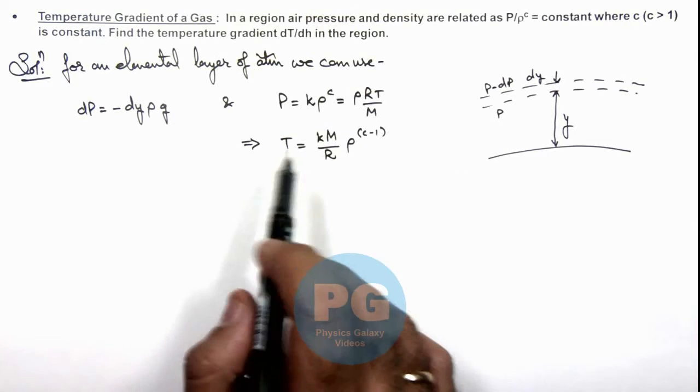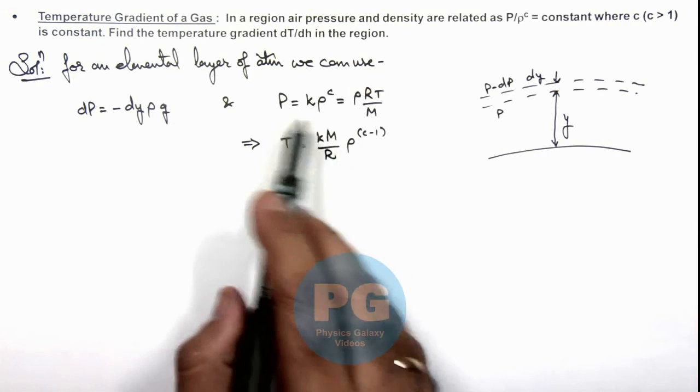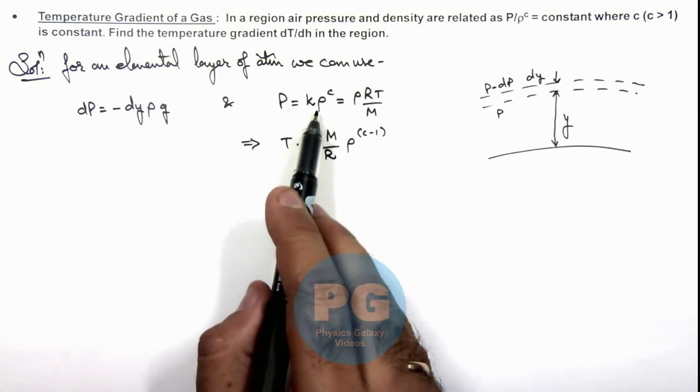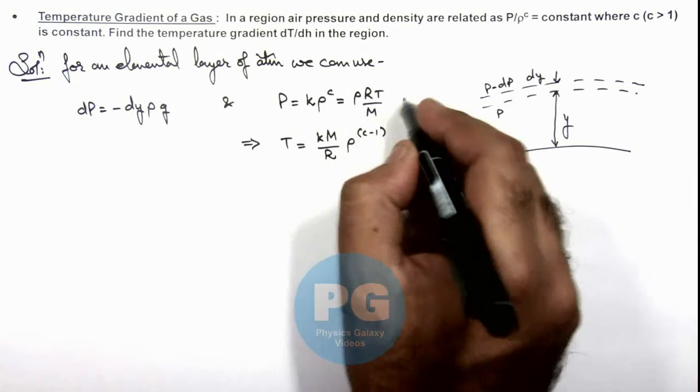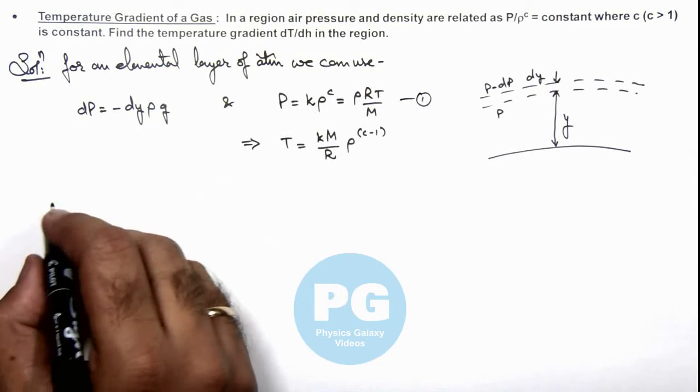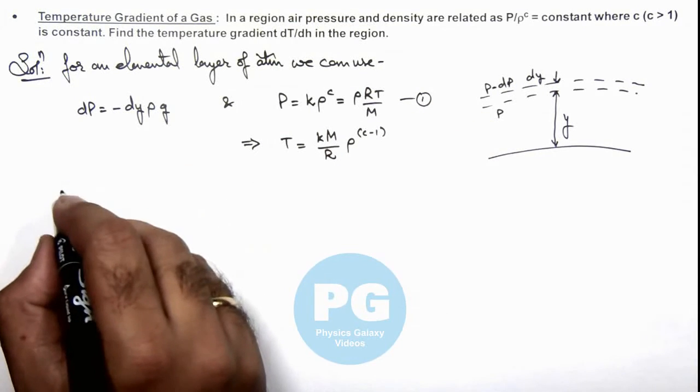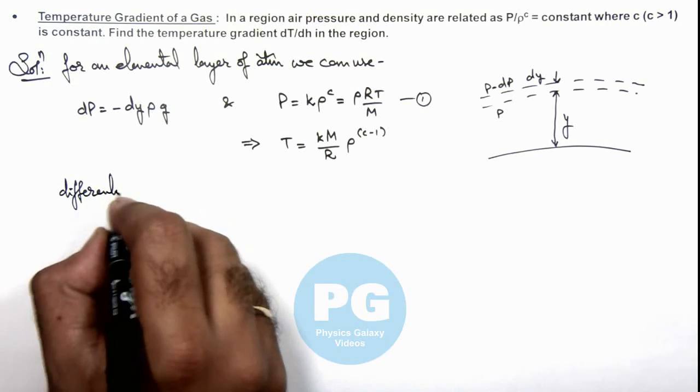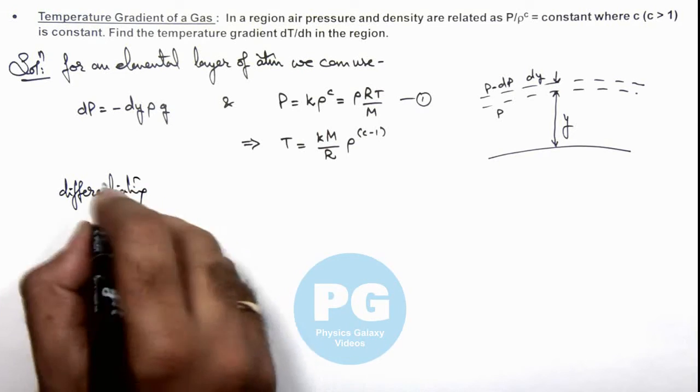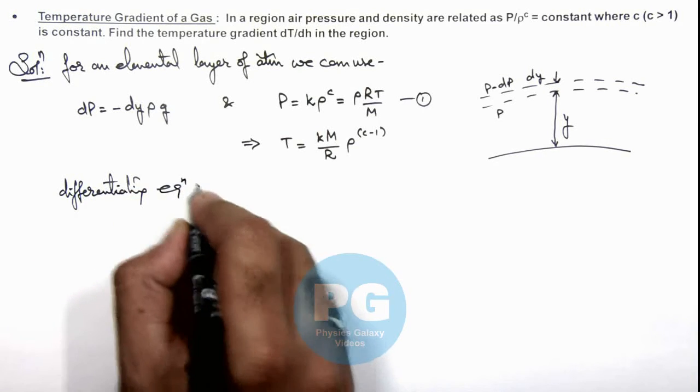We can also relate the value of pressure in terms of density in differential form. So if this is equation 1, we can directly write down the differential form or differentiating equation 1.